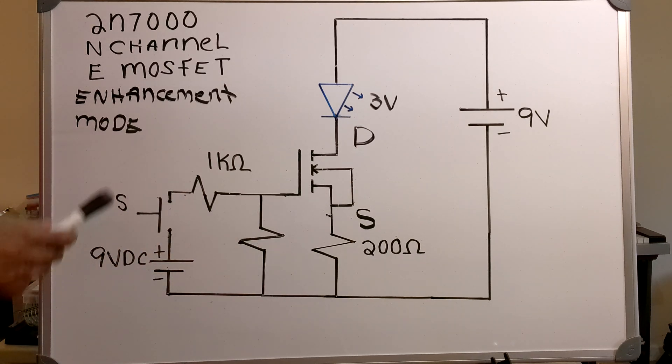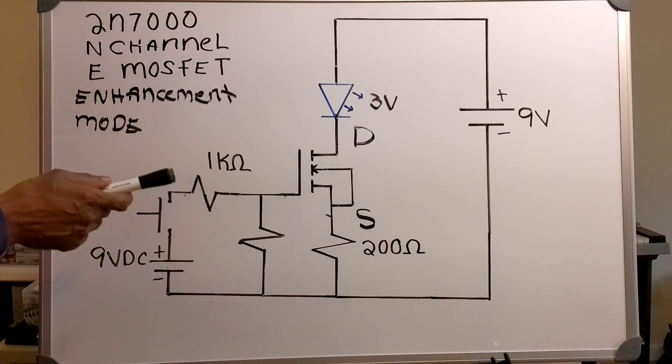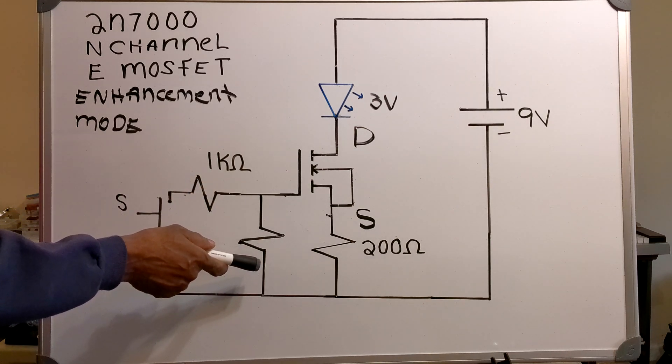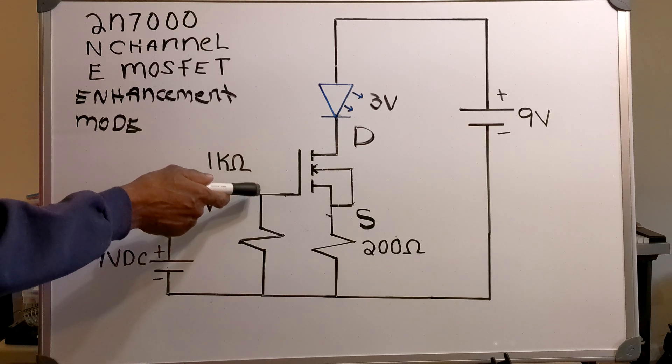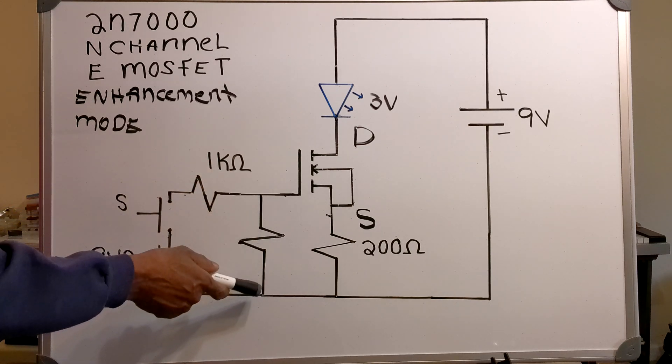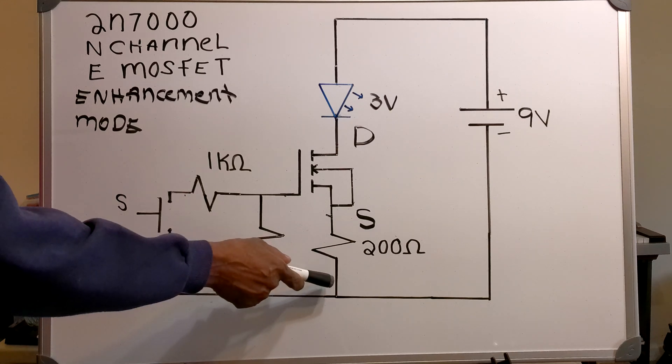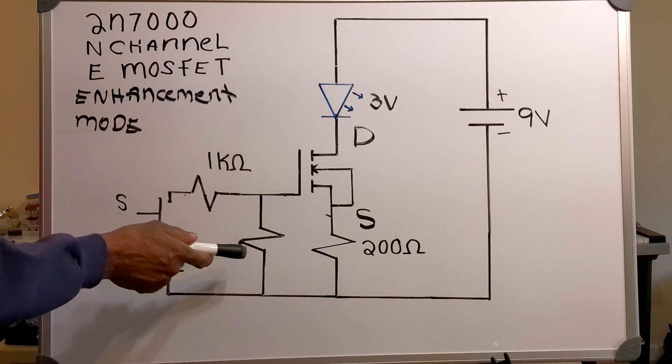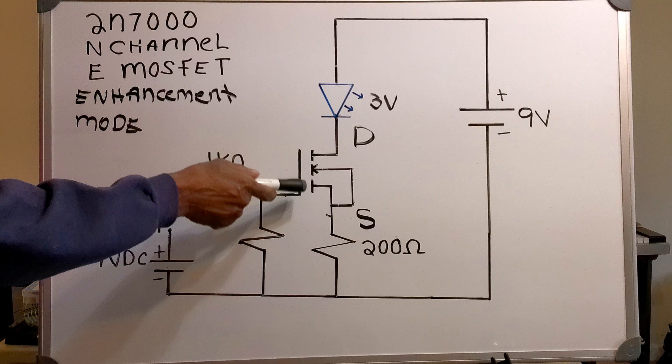Now the question is exactly what's going on in the circuit, and the answer is absolutely nothing. The reason we have nothing going on in the circuit is because this switch is open, and this resistor is grounding the gate at the source. Now what this means is that there's absolutely no voltage on the gate.